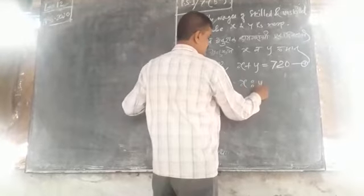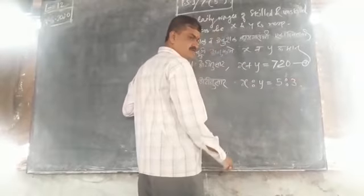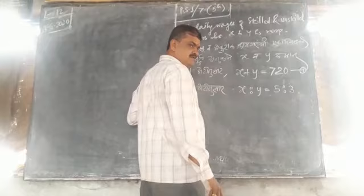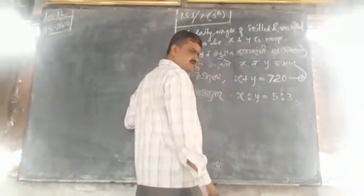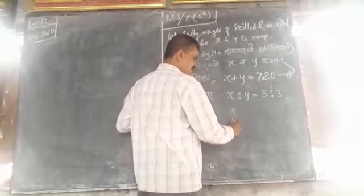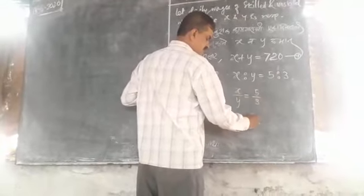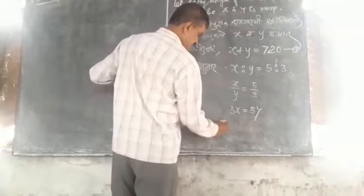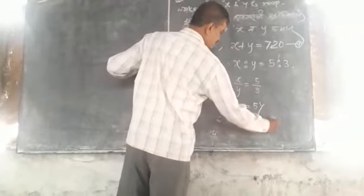X is to Y is equal to 5 is to 3. The ratio of the skilled and unskilled workers is 5:3, daily wages. So X to Y equals 5 to 3. Therefore, 3X is equal to 5Y.